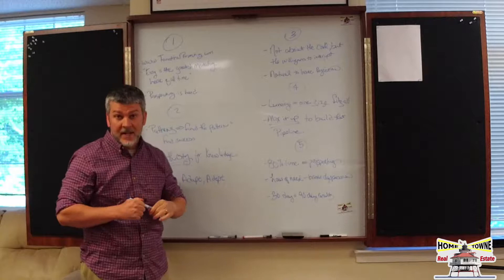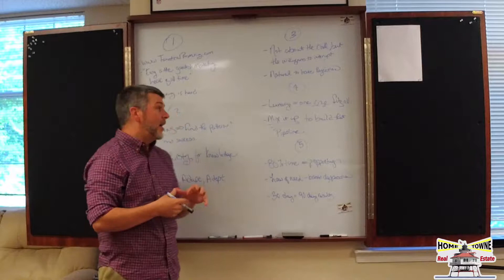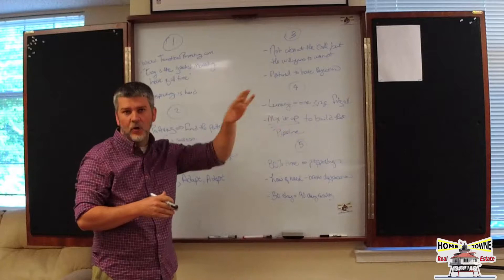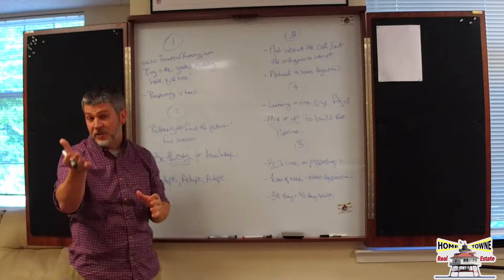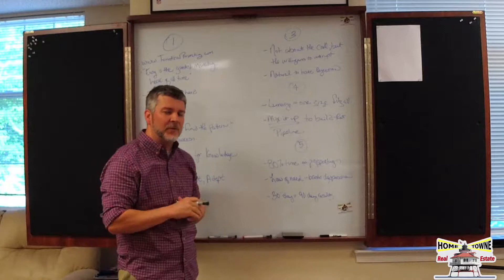Our new book is 'Fanatical Prospecting' by Jeb Blunt, and it's almost the opposite of our last one. The last book by Chris Smith was very technical - a lot of scripting, ABCD steps. This book covers the same concepts but in a motivational sense. It's not 'here's how you do it' - it's 'you should be doing it, get off your butt and do it.' These chapters might go through faster for us; there's not a ton of notes.